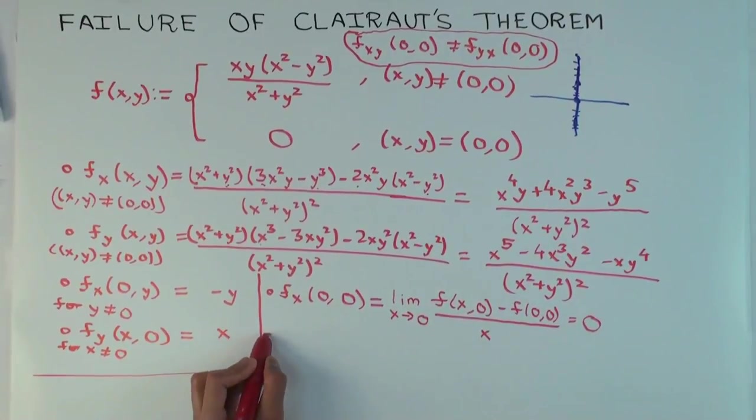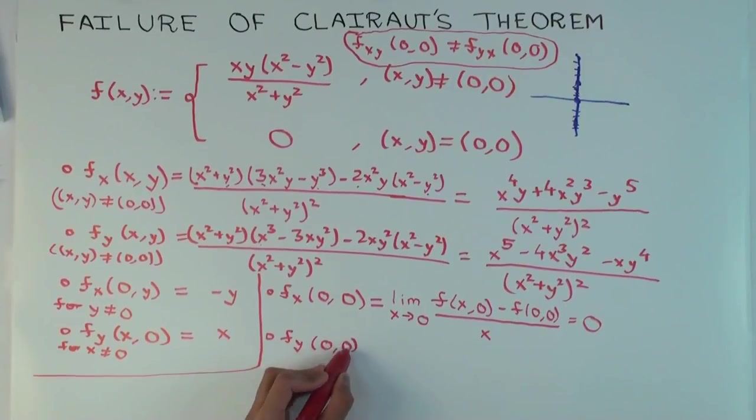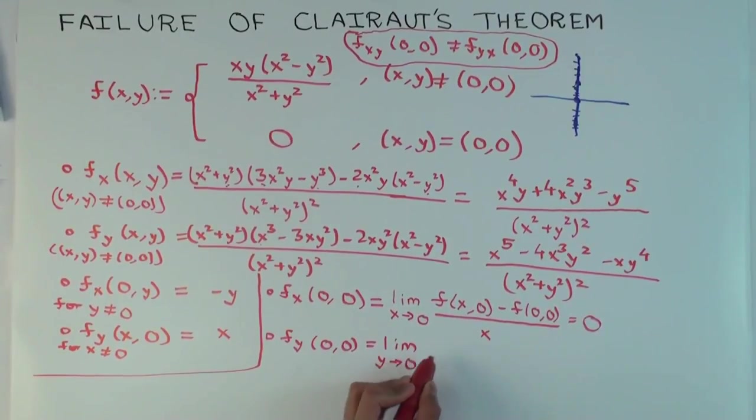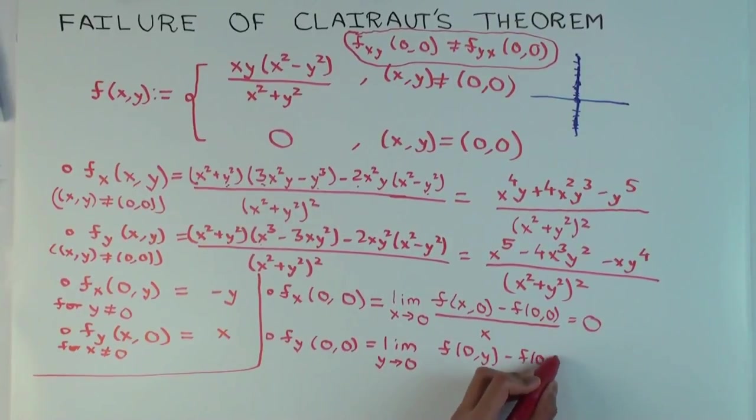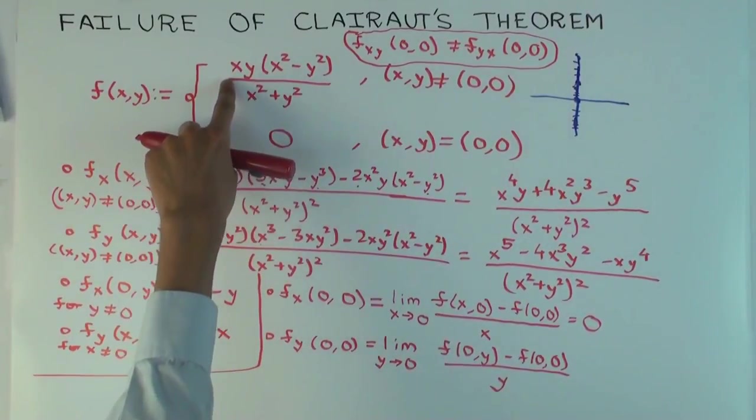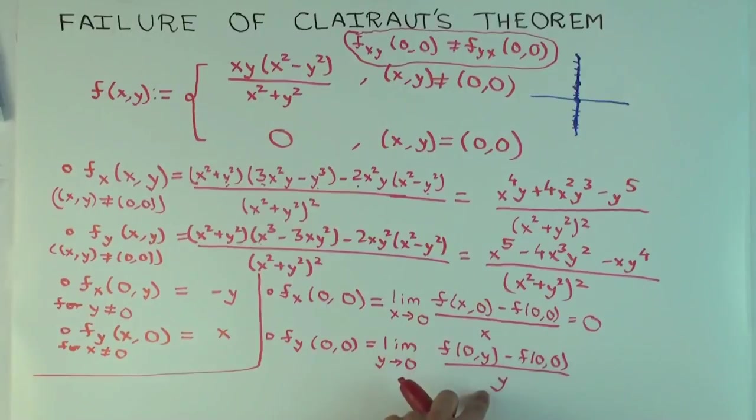And f sub y of (0,0) is, what limit is this? It's limit as y approaches 0, f of (0,y) minus f of (0,0) over y, what does that become? When you plug in x equals 0, what do you get as a limit? 0. So, 0 minus 0 over y, so that's limit of 0, this is 0.